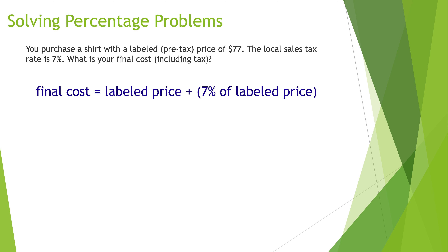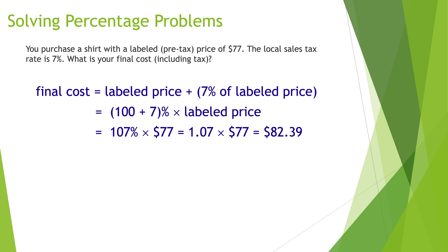The final cost is the labeled price plus 7% of the labeled price. From a mathematical perspective, that's 100% of the labeled price plus 7% more, which is 107% — or 1.07 as a decimal. So 1.07 times $77 equals $82.39.